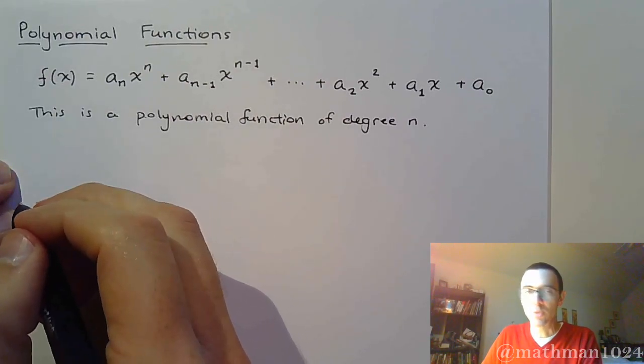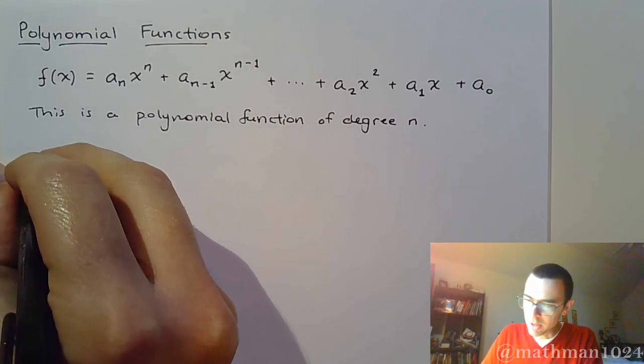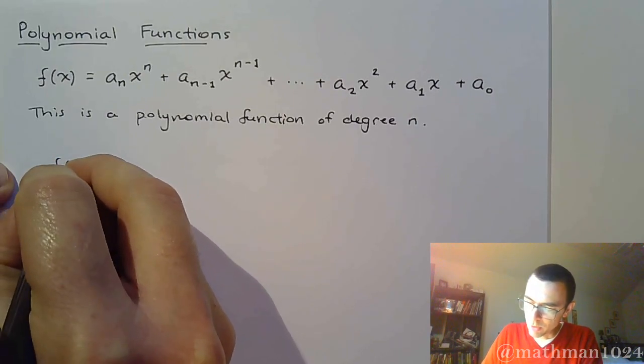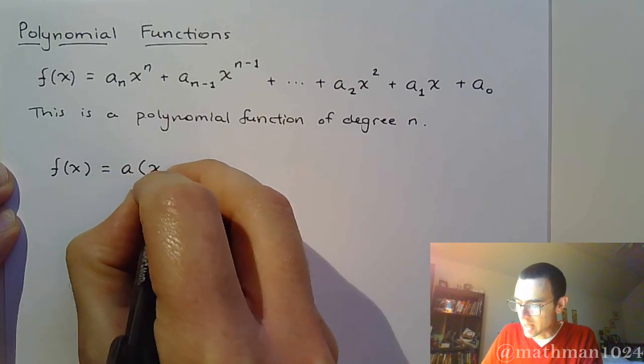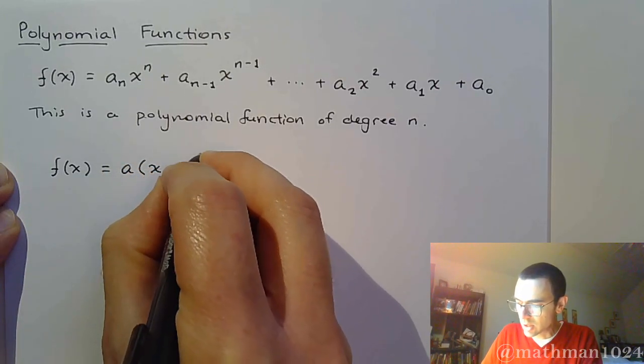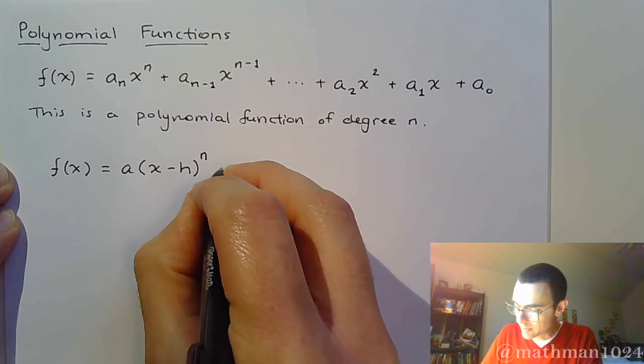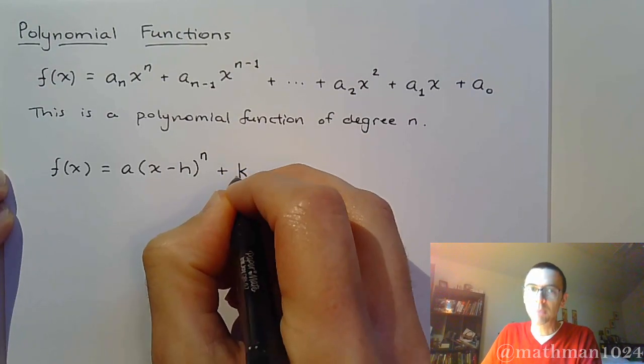But most of these guys that we're going to be seeing right now can be written in a form that we were used to seeing when we were graphing non-linear functions. So something like a times x minus h to the n plus k.